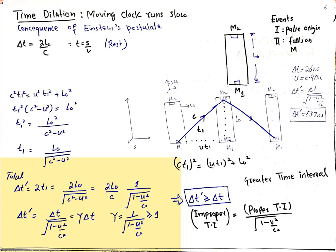Since 2L-naught / c is the time interval in the frame where the setup is at rest, I call it delta_t. Therefore delta_t' = delta_t / sqrt(1 − u²/c²), or equivalently delta_t' = γ * delta_t, where γ = 1 / sqrt(1 − u²/c²). Since γ is always greater than or equal to 1, delta_t' is greater than delta_t — the time interval has been dilated.